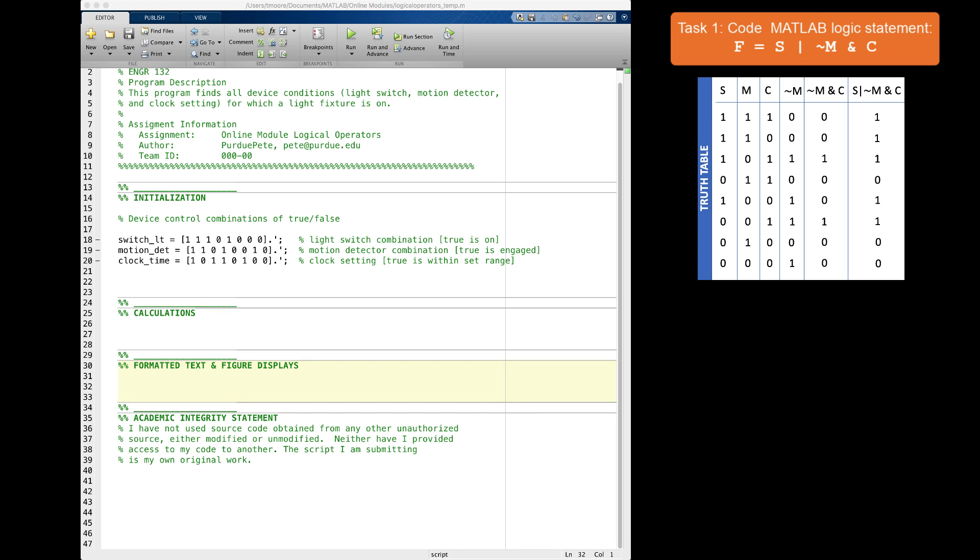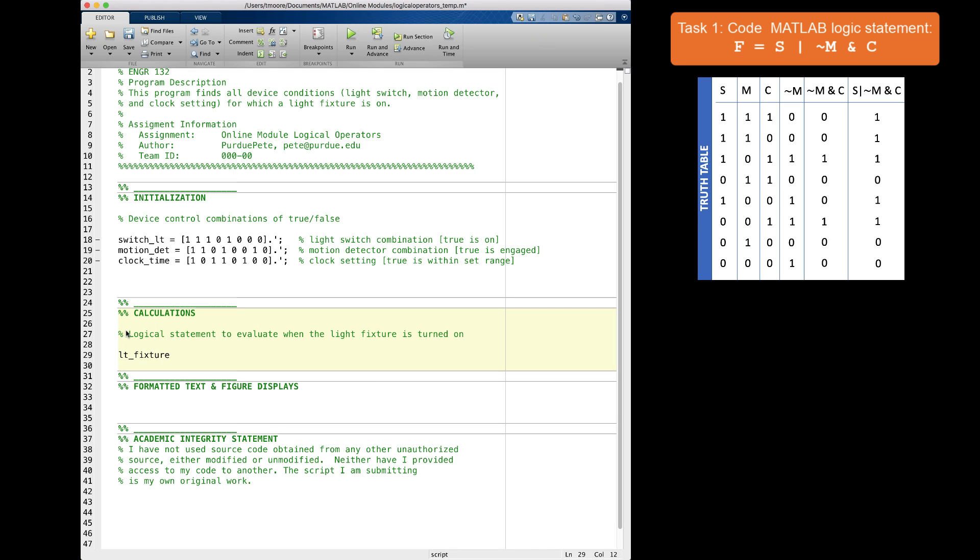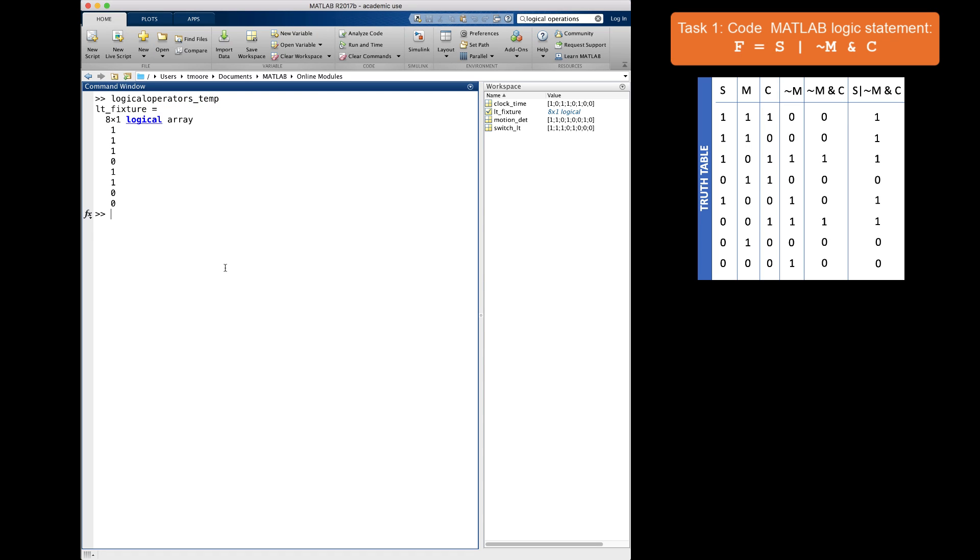Now let's code this in MATLAB. I have already started a script and have initialized the variables for the switch, motion detector, and digital clock. In the calculation section, we need to add our logic statement with correct MATLAB code. So I will name the variable for the light fixture LT underscore fixture, set it equal to switch underscore LT, use the logical OR, then the NOT motion underscore DET, the logical AND, and the variable clock underscore time. Let's run this script to verify that this gives me the result I expect. Good! I get the same output as my truth table. Now let's think about how to use MATLAB to verify the conditions for which the light fixture is on.